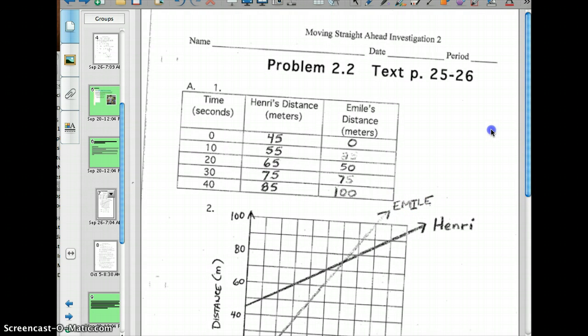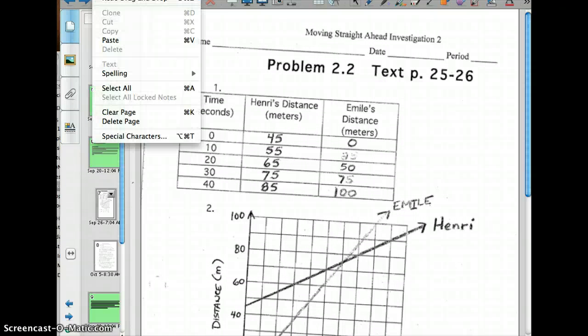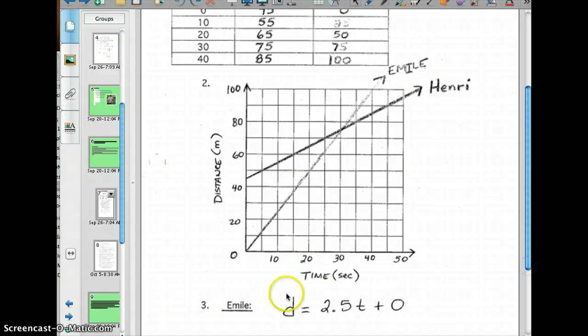I tilted that graph, I didn't want to do that. Let me rotate there. So let's look at the graph here. Notice we have time, which is almost always going to be on our horizontal axis, and that's in seconds. And then our distance is in meters, and that's on our vertical axis.